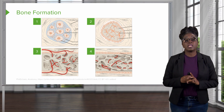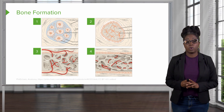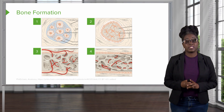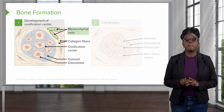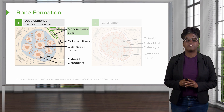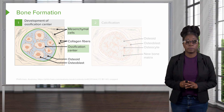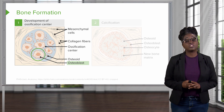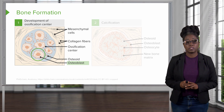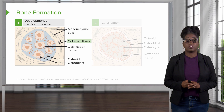When it comes to intramembranous ossification, or the formation of flat bones, there are four major steps. In the first step, the mesenchymal cells in the mesenchyme of the fetus are going to create an ossification center. These cells will then differentiate into osteoblast cells, which then secrete extracellular matrix, including collagen fibers.